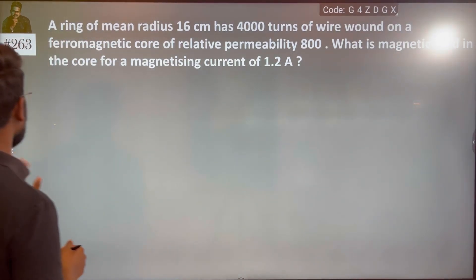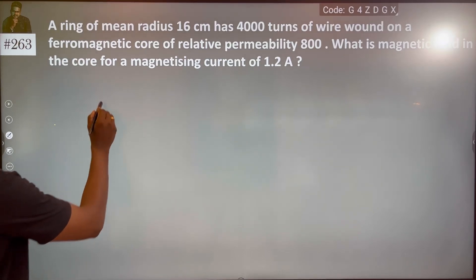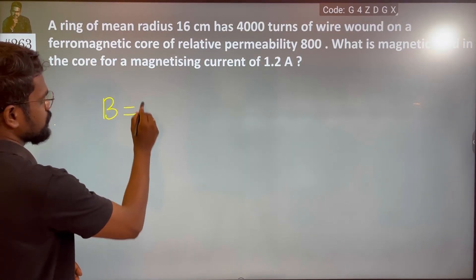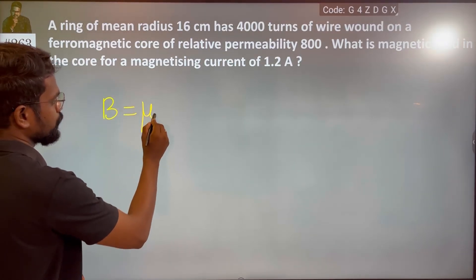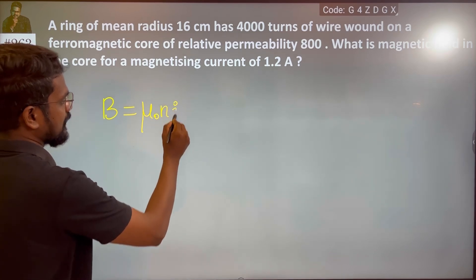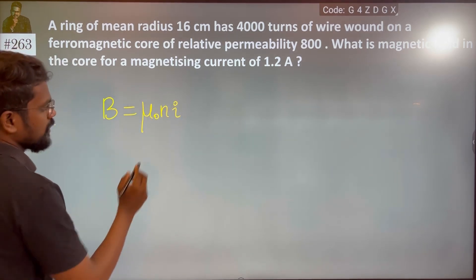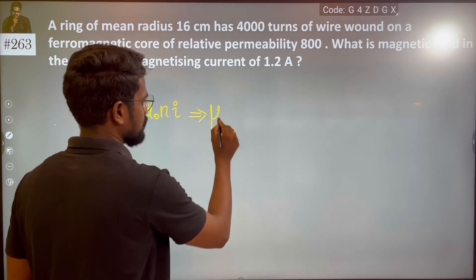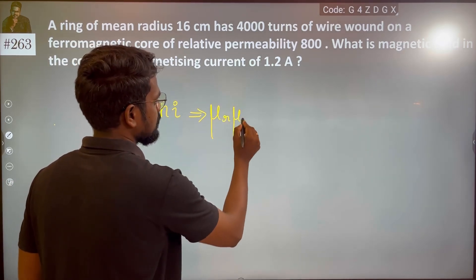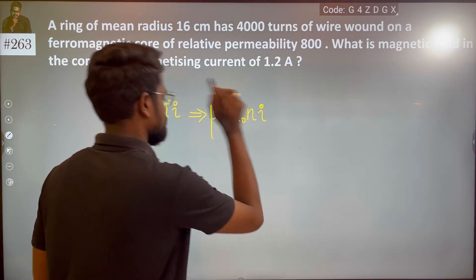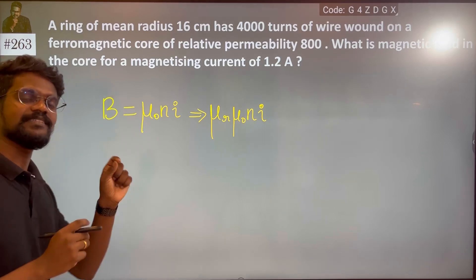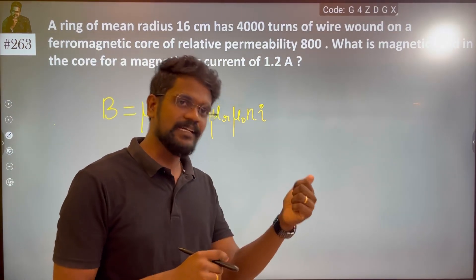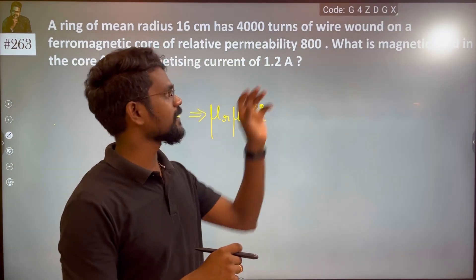The magnetic field formula is B = μ₀·μᵣ·n·I. This is essentially a solenoid, so we use the solenoid formula. Since μᵣ is given as 800 (not air where it would be 1), we substitute the given value.